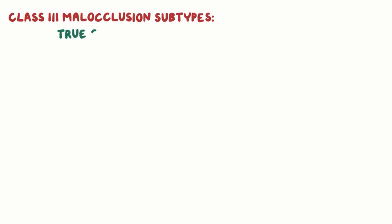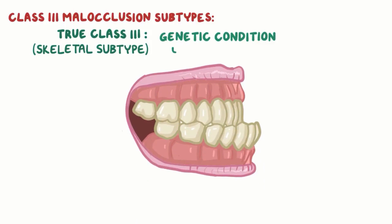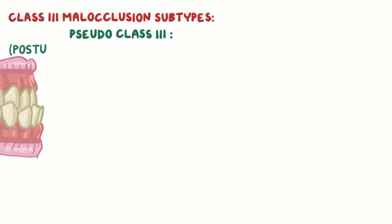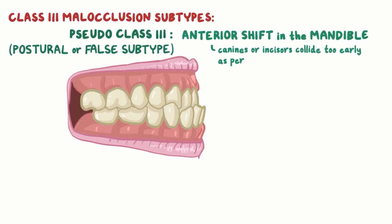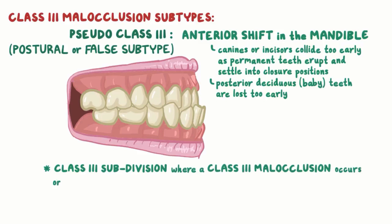Class III has subtypes as well. True class III malocclusion, also called the skeletal subtype, is a genetic condition resulting in either a relatively small maxilla or a relatively large mandible. Pseudo-class III malocclusion, also called the postural or false subtype, is a result of an anterior shift in the mandible. This can result if the canines or incisors collide too early as the permanent teeth erupt and settle into their closure positions, or if the posterior deciduous or baby teeth are lost too early in life. Lastly, there's a class III subdivision, where a class III malocclusion occurs on one side of the mouth while the other side has a class I occlusion.